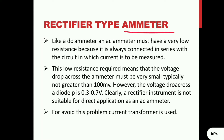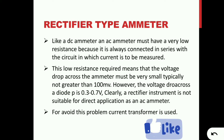An ammeter must have a very low resistance so we are able to measure the current. Both DC ammeter and AC ammeter must have very low resistance because they are always connected in series with the circuit in which current is to be measured. The voltage drop across the ammeter must be very small, typically not greater than 100 millivolts. However, the voltage across a diode is 0.3 volts to 0.7 volts, so clearly a rectifier instrument is not directly suitable as an AC ammeter.